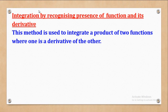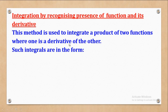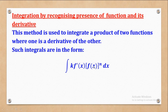This method is used to integrate a product of two functions where one is the derivative of the other. Such an integral is in the form: the integral of a constant k multiplied by the derivative of a function, where the function outside the bracket is the derivative of the function inside the bracket, which is raised to a power n.